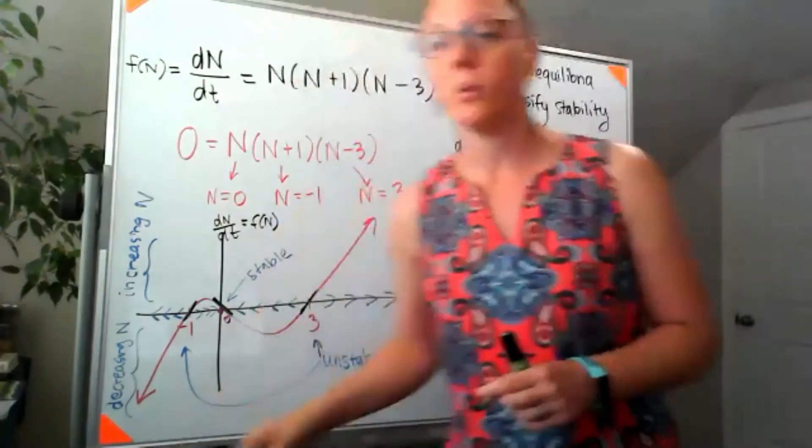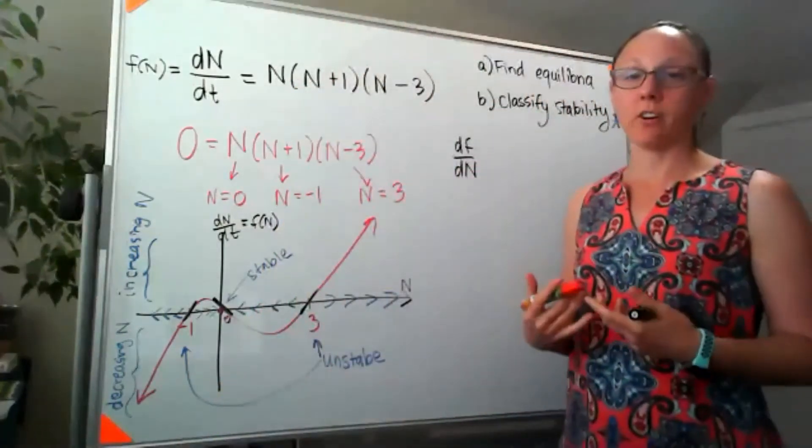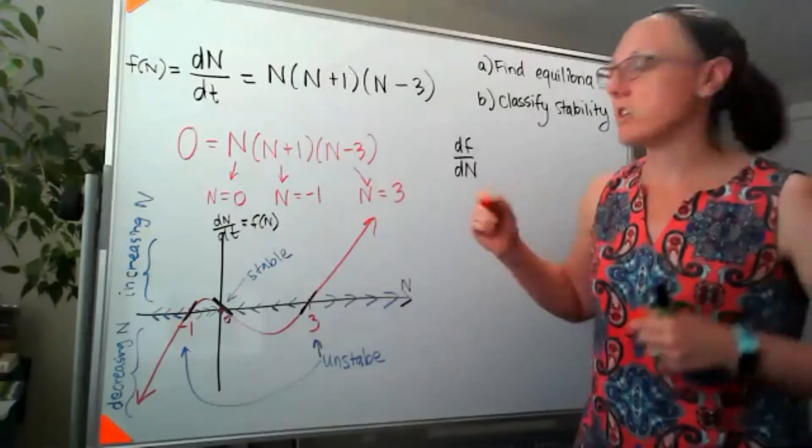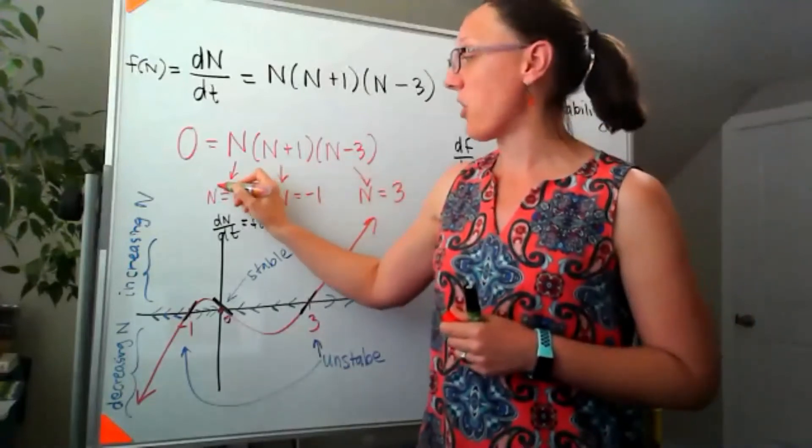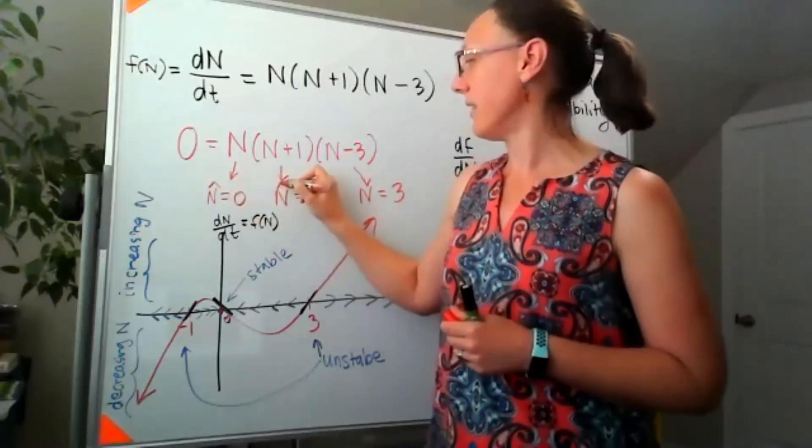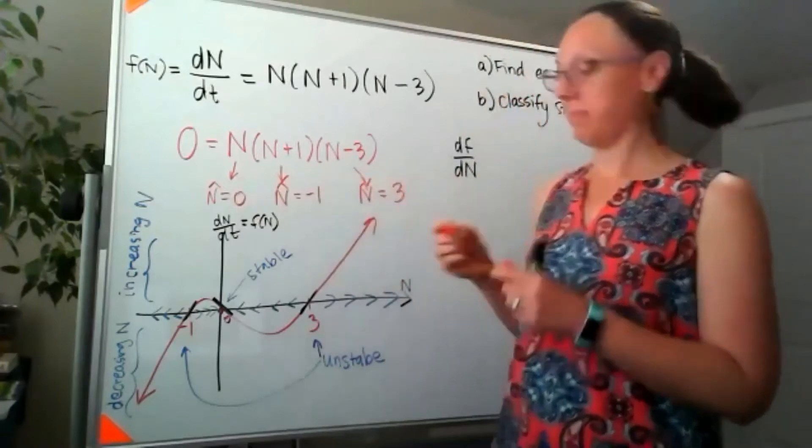Notation wise, one little thing here, usually in our textbook, if we're talking about an equilibrium, we denote that by putting either a star or a hat on top.